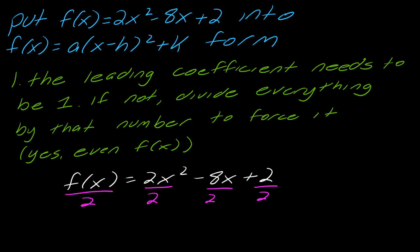Now I can see what I'm left with. I'm left with f(x) over two, and this is going to equal x squared minus 4x plus one. Now we can move on to the next step.